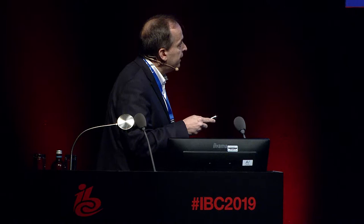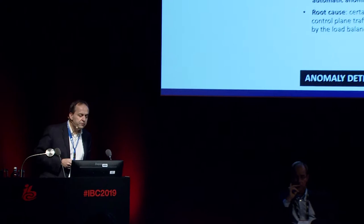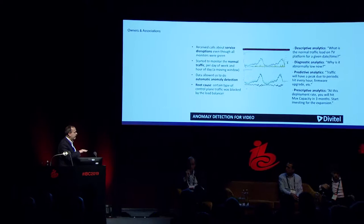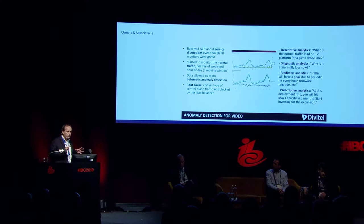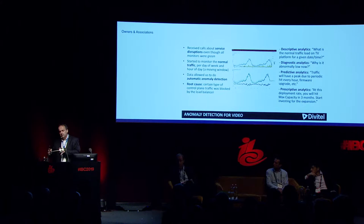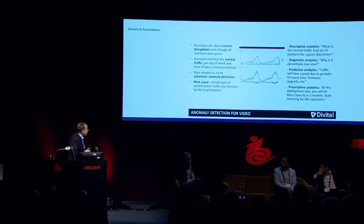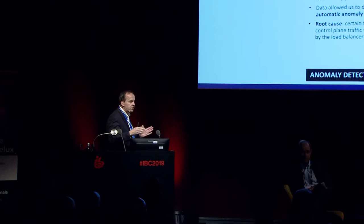Looking at the upper part of the slide, we collected data from the control plane. Our engineers used machine learning techniques to make predictions — shown in the lower part — and by evaluating the differences between the prediction and actual data, they were able to very quickly identify the root cause: that a certain part of the control plane traffic was being blocked by the load balancer.